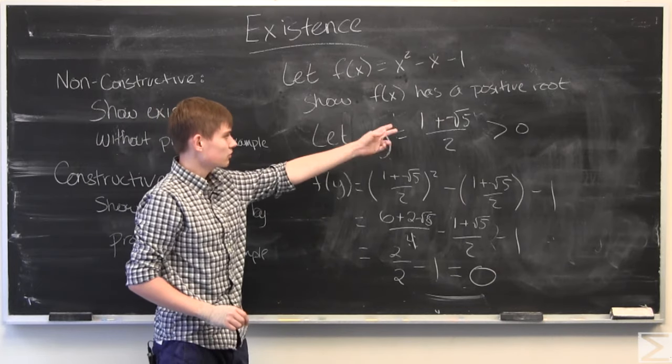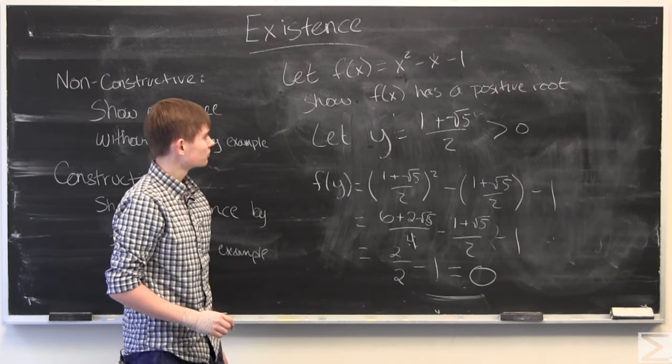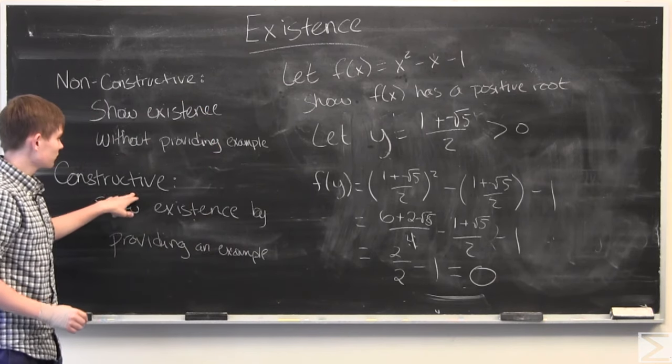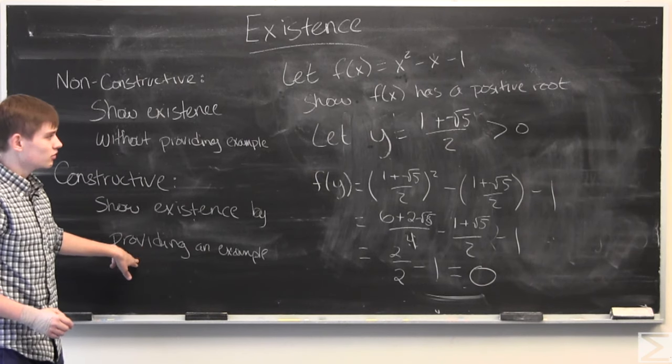So if we let y equal 1 plus root 5 over 2, we plug it in, we find that it's the positive root. This is the constructive way to show this because we provided the positive root.